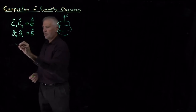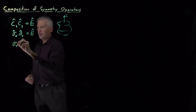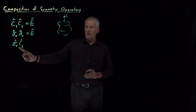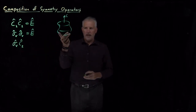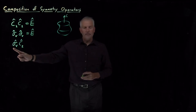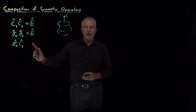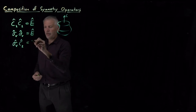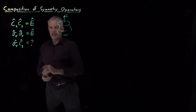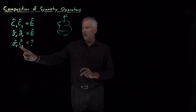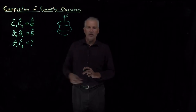But sometimes composition is a little bit trickier. If we first rotate by a half circle and then reflect, what do we get? It's not the same as doing nothing, but it takes a little effort to figure out what you get when you rotate something by 180 degrees and then reflect it through a mirror.